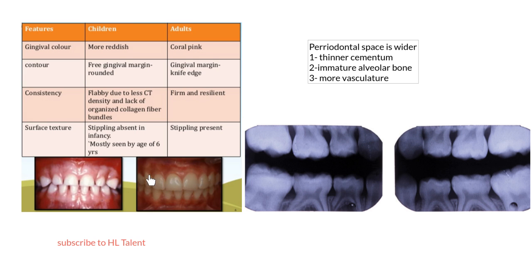Regarding surface texture, stippling is absent until the sixth year of age in the child, while it is a normal appearing clinical feature in the adult.